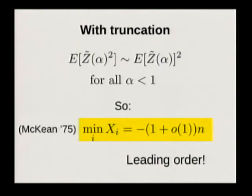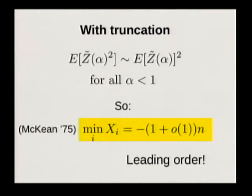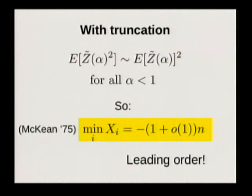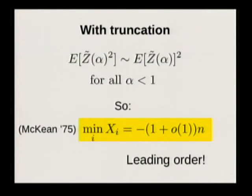With this truncation and the Paley-Zygmund inequality, you get a lower bound matching the upper bound. You can show that the minimum of this field is close to n. This result was originally proven by McKean. It says the minimum behaves as if each of your profiles were independent, even though clearly they're not — the correlations don't seem to affect the leading order.